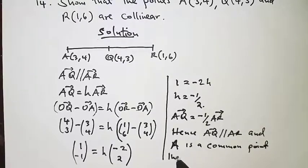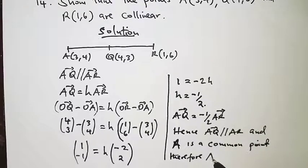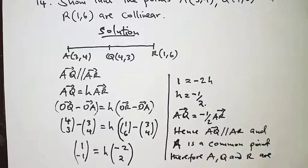Therefore, from here we can see that the points A, Q, and R are collinear.